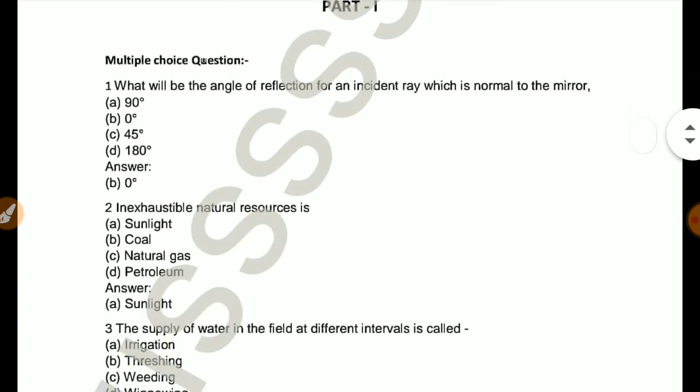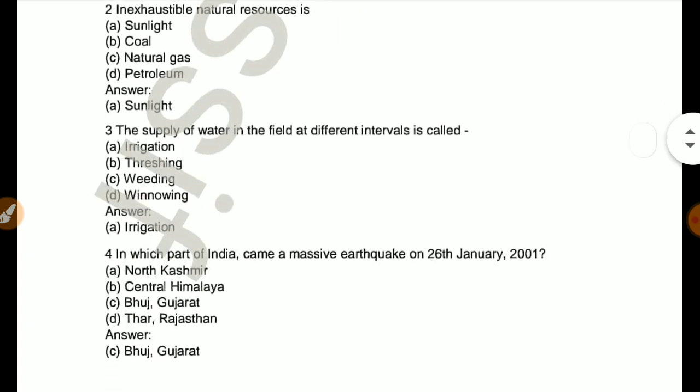First question is what will be the angle of reflection for an incident ray which is normal to the mirror. Inexhaustible natural resources is sunlight. The supply of water in the field at different intervals is called irrigation.